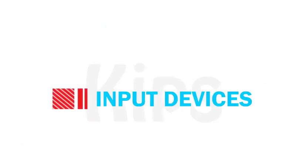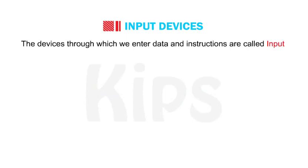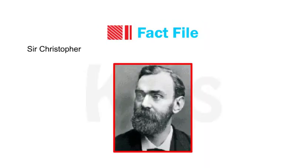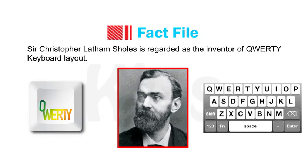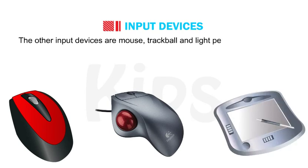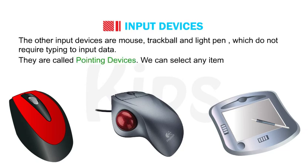Let us now talk about the input devices. The devices through which we enter data and instructions are called input devices. The most commonly used input device is the keyboard. The other input devices are mouse, trackball and light pen, which do not require typing to input data. They are called pointing devices. We can select any item on the screen by pointing and clicking on it.